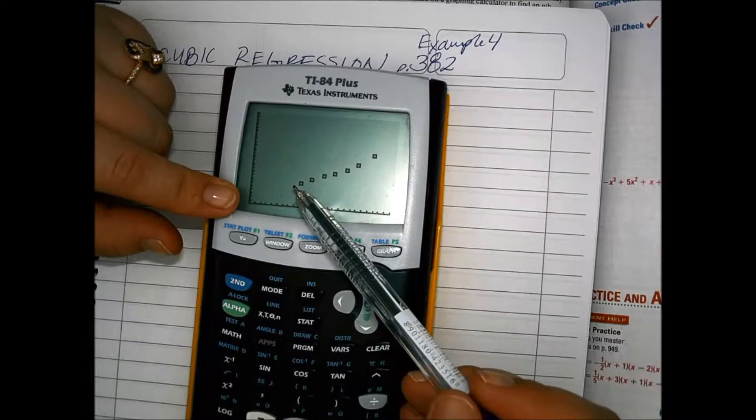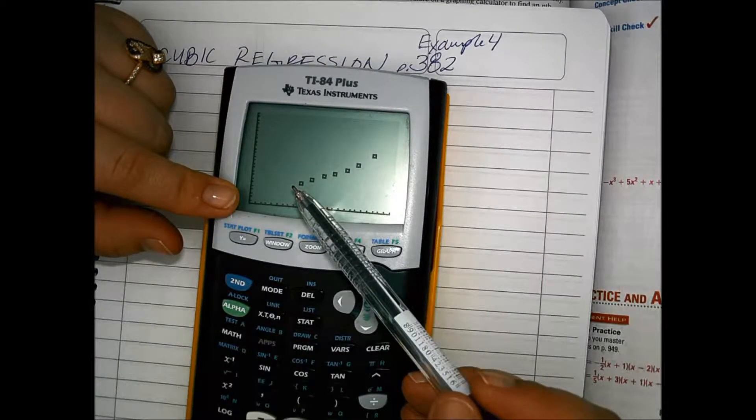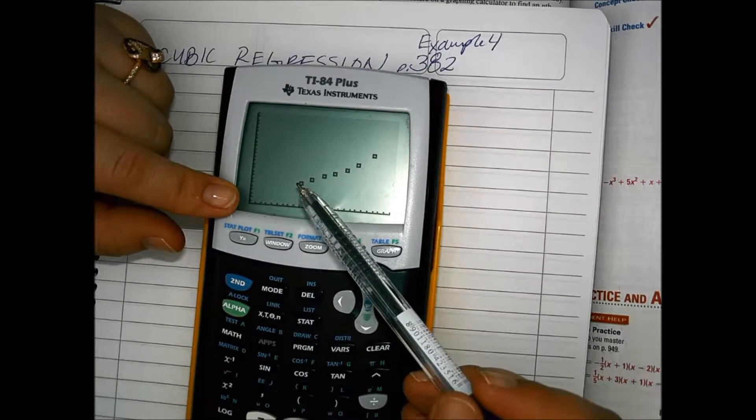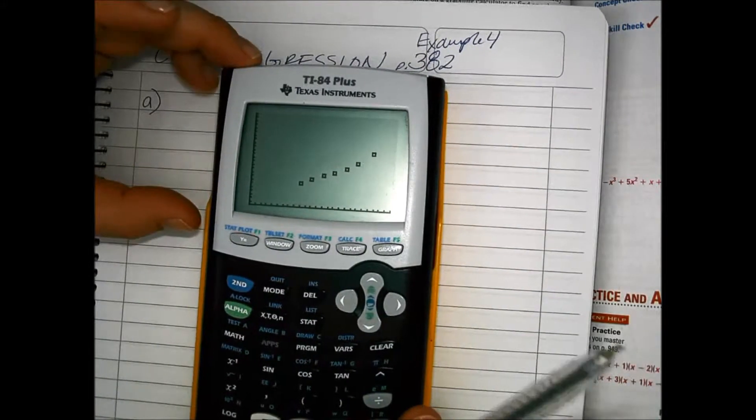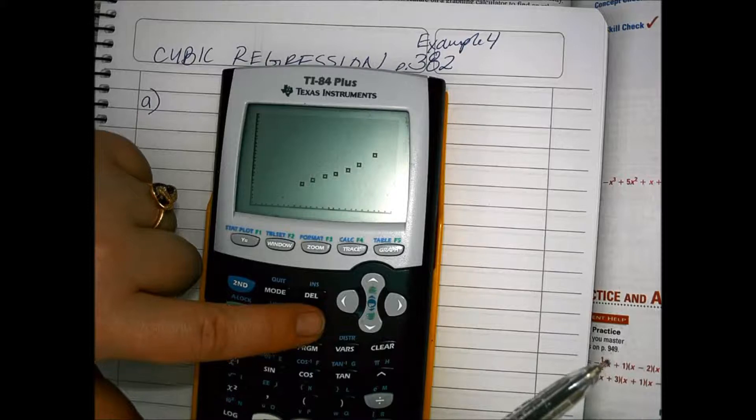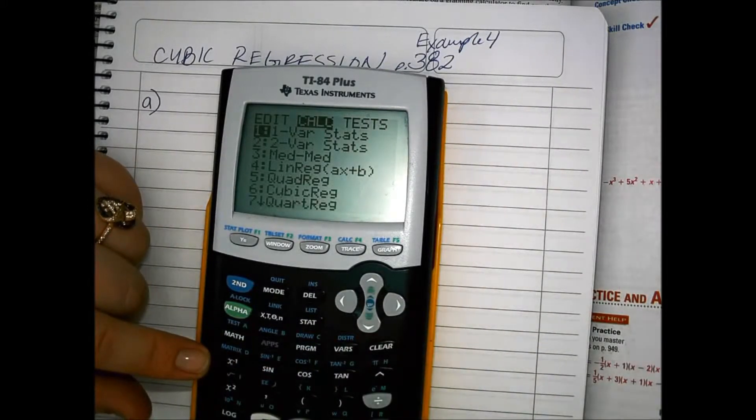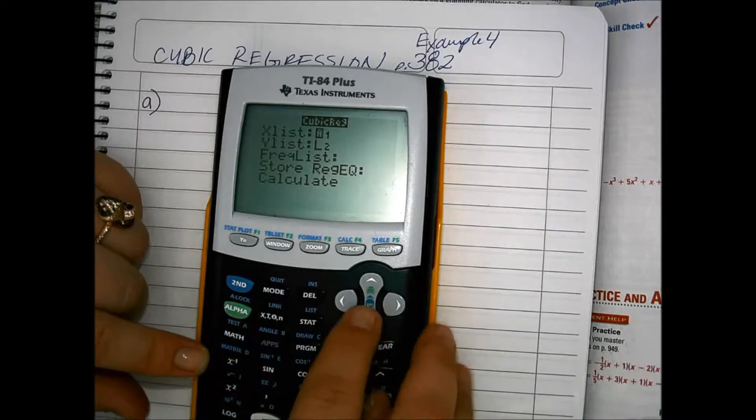That is why we're going to use cubic regression to represent and define the polynomial that fits this data. Let's go ahead and do that. That's part A. Go to stat, go to calculate, go down to 6, which is cubic regression.